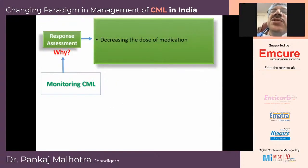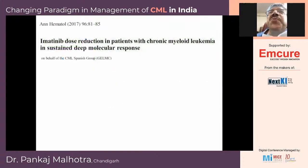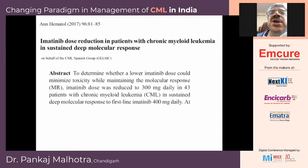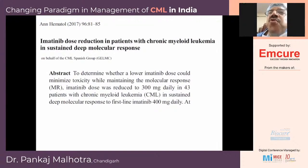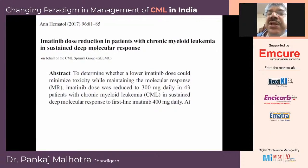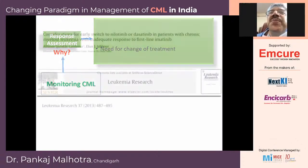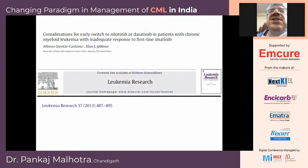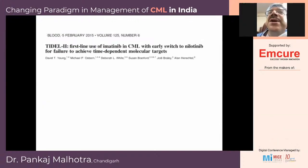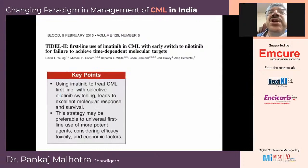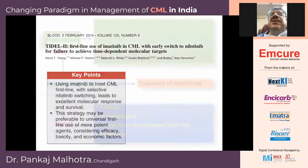Monitoring also guides decreasing the dose of medication. If a patient is in molecular response or sustained molecular response, you can decrease the dose from 400 to 300 mg and sometimes even 200 mg, which reduces side effects and improves quality of life. If there is a need for change of treatment — when the patient is not achieving the desired response — you can consider changing to nilotinib or dasatinib, as supported by several studies.